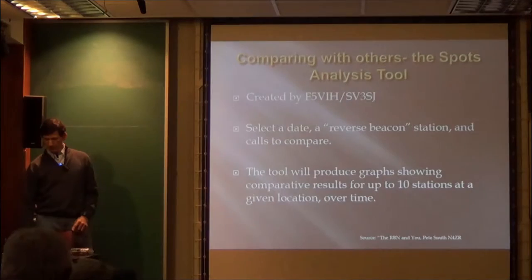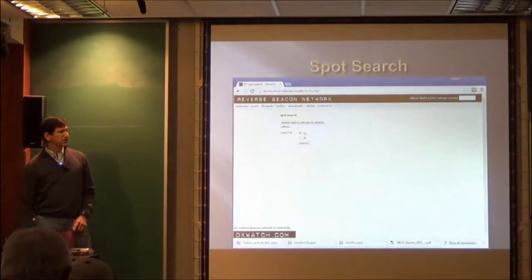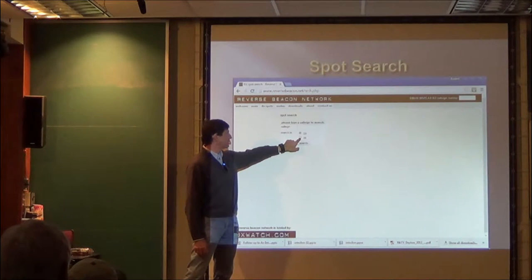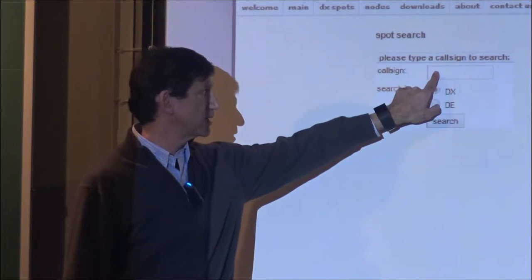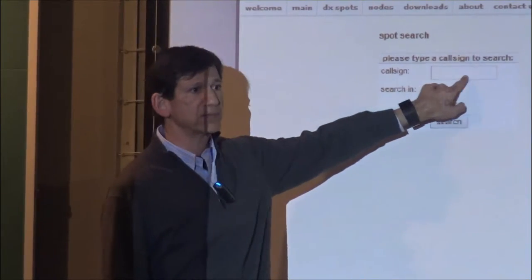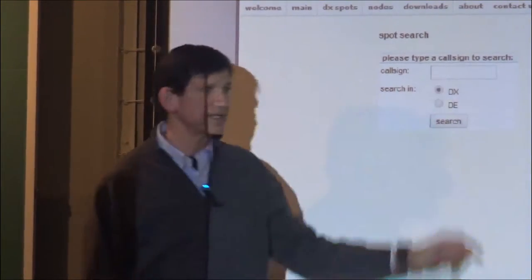If you're out there with a buddy, and he has a different type of antenna, we're both running five watts, and you want to see what stations pick me up versus what stations pick him up, you can actually compare the performance of your antennas. What's the DE? The DE are the skimmers. So if you want to do a search on, particularly like, what are the stations that were picked up by W3LPL, you would put that in there.